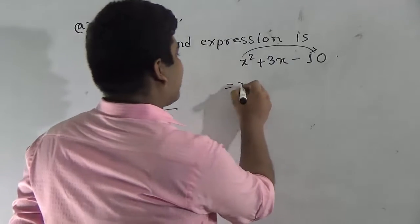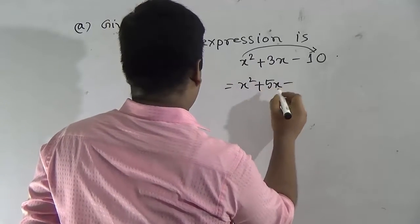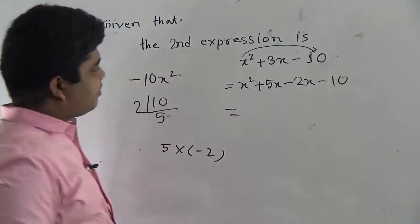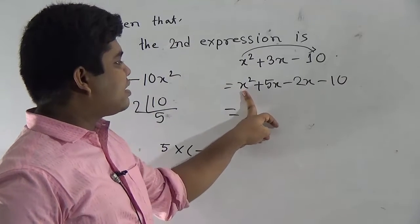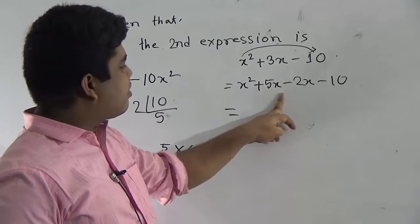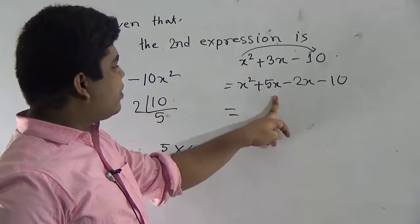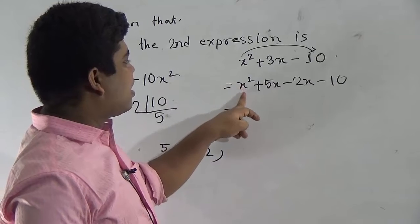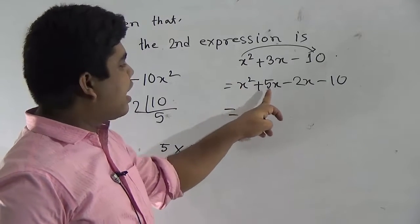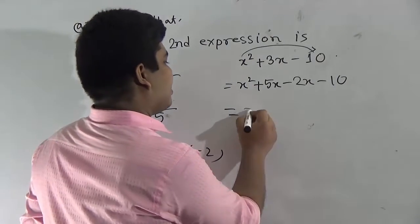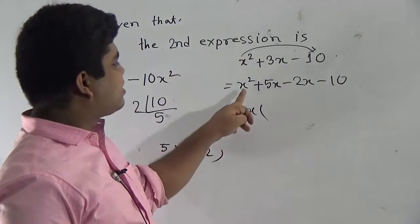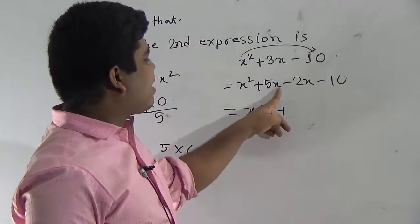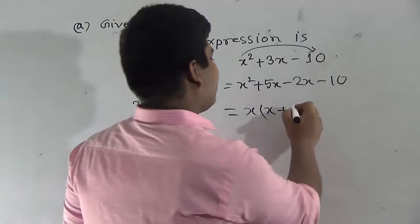So we write: x squared plus 5x minus 2x minus 10. From the first two terms, x squared plus 5x, which number is common? Here x is present in x squared and x is also present in 5x. So we take x as common. We divide x squared by x and get x, and we divide 5x by x and get 5.